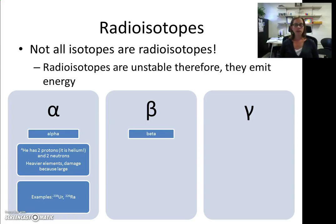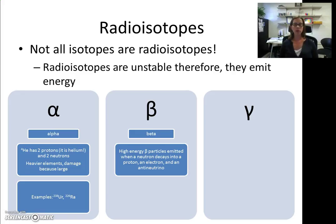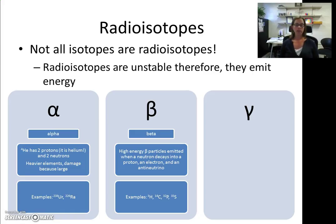The second type are beta particles, which are higher energy particles emitted when a neutron in the unstable nucleus decays into a proton, an electron, and an antineutrino. Some examples of elements that emit beta particles include hydrogen, carbon, phosphate, and sulfur, and I'm going to go into more specific details about these four examples.